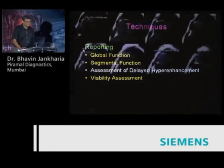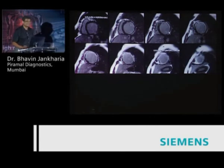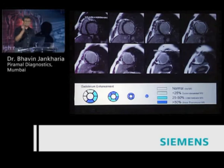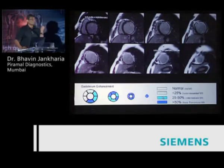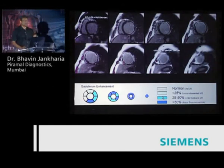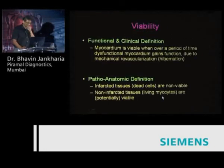We do the same thing with the delayed hyper-enhancement. From the short axis stack base to apex, we look at the white areas and determine the percentage of myocardial involvement. Anything greater than 50% is dark blue; the rest are color coded in light green and dark green. This gives a clear sense of the extent of infarction across all segments before proceeding to the viability assessment.